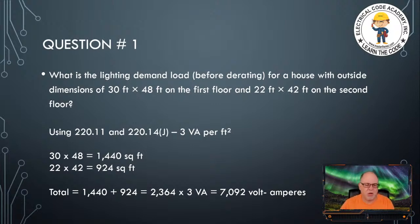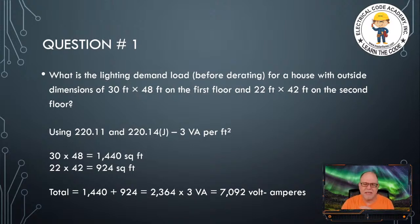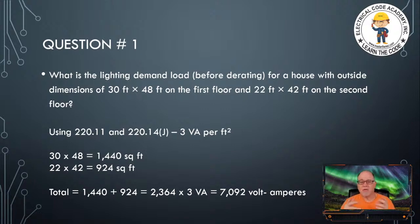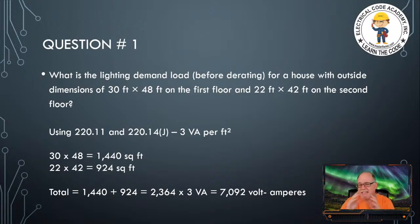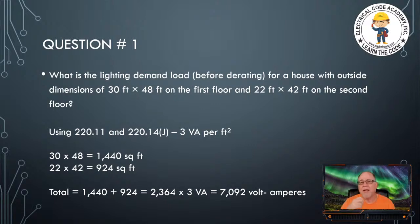Let's get those square footage values. 30 by 48 is 1,440 square feet. 22 by 42 is 924 square feet. Add the two together for both floors: 1,440 plus 924 is 2,364. Times 3VA per square foot equals 7,092 VA. That is our lighting connected value — the lighting demand at 3VA per square foot. We haven't applied any demand factors to reduce that value yet.